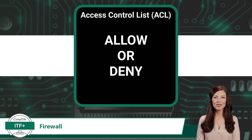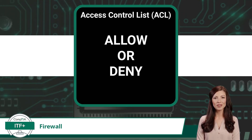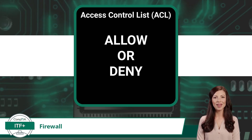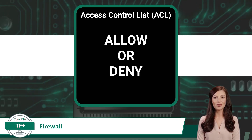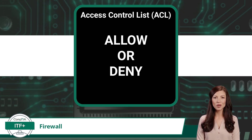Predefined security rules and policies, in the context of network firewalls, are often implemented using a mechanism called access control lists, or ACLs. An ACL defines the specific criteria that determines whether network traffic will be allowed or denied by the firewall.